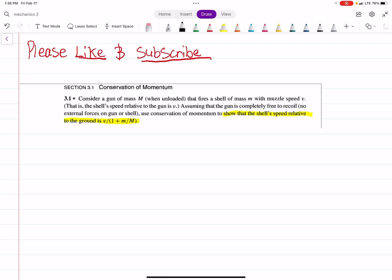To go about this problem, we first need to consider conservation of angular momentum as hinted in the problem, which tells us that initial momentum equals final momentum. In this case, we'll call Mvg for the gun equals mvs, velocity of the shell. Mass of the shell is little m, mass of the gun is big M.